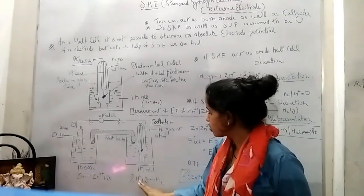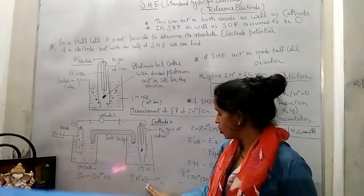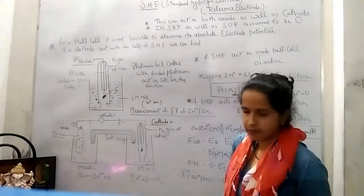Here reduction occurs, means SHE is acting as a cathode, represented by positive sign. Reduction means 2H+, H+ comes from electrolyte, H+ takes two electrons to become H₂.